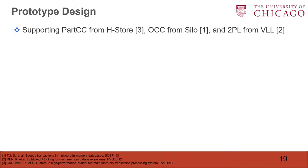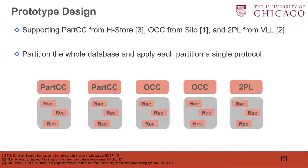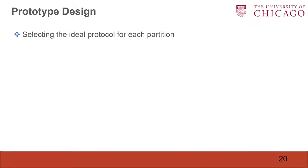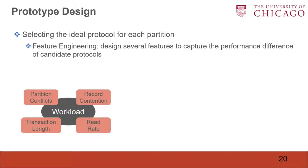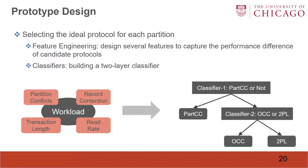VLL is a lightweight and optimized two-phase locking that removes the centralized lock manager and co-locates locks with database records. We partition the whole database and apply each partition a single protocol. To select the ideal protocol for each partition, we perform an analysis by designing several features to capture the performance difference of different protocols. Based on that, we design a two-layer classifier to predict which protocol should be used for each partition.